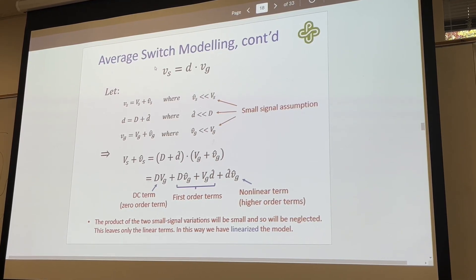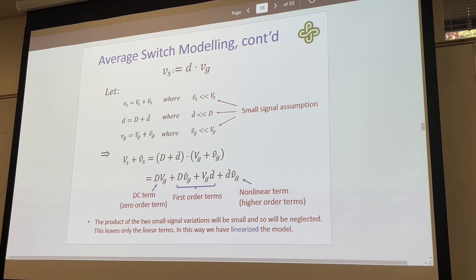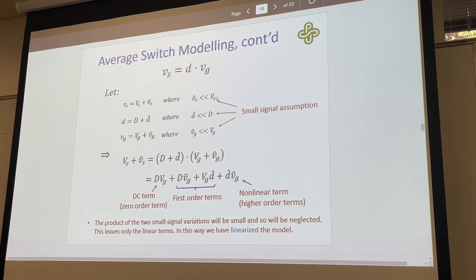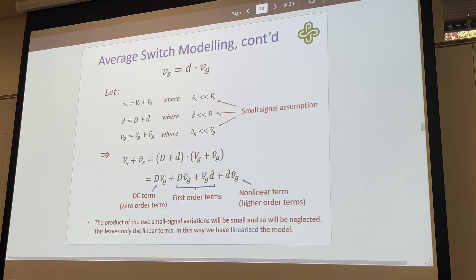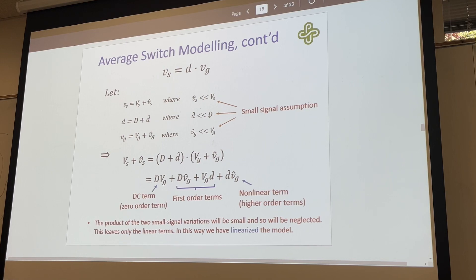When we break down this average switching model, the output of our square wave is equivalent to the average of our output, which is equivalent to the average of the duty cycle times our voltage input. We can break this down where the average of the square wave is the average plus small deviations, assuming the small deviation is much smaller than the average output. We do this for the duty cycle as well, where D equals the steady state value plus small deviations, where the small deviations are much less than our steady state.